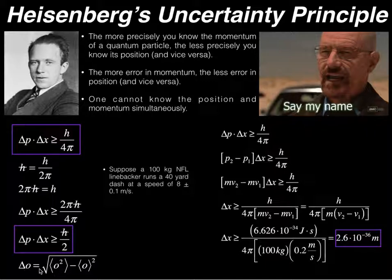But for now, I want to consider a problem that really demonstrates why at a classical level, you don't have to use quantum mechanics. You can, but it's not necessary. So consider a 100 kilogram NFL linebacker that runs a 40 yard dash at a speed of 8 plus or minus 0.1 meters per second.